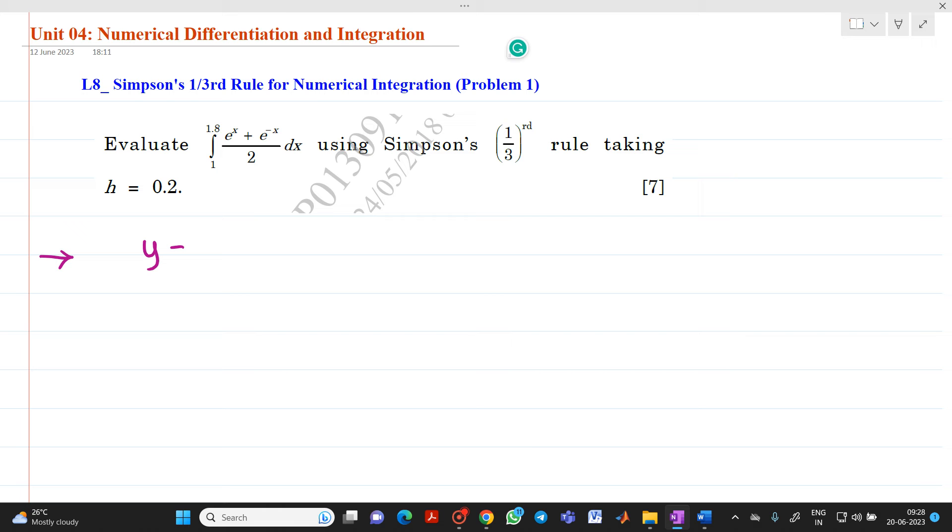So, what is our function? y equal to f of x equal to e raised to x plus e raised to minus x divided by 2. Now, h has been given to us which is equal to 0.2. Lower limit x0 will be equal to 1. Upper limit xn equal to 1.8.